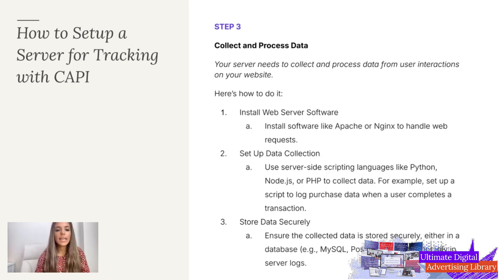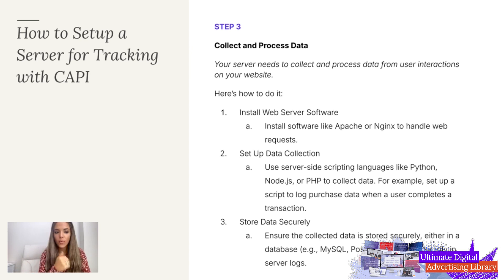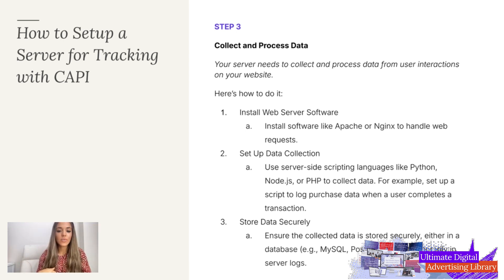Step number three is to collect and process your data. Your server needs to be able to collect and process that data to send it to whatever platforms it needs to. Here's how you do that: you're going to install the web server software — whatever software you need to handle those web requests and web events — and then you're going to set up data collection using a server-side scripting language.